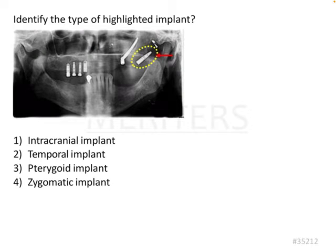Identify the type of highlighted implant. So we have an OPG here and we have four different types of implants. Let's try to break down each one of these.